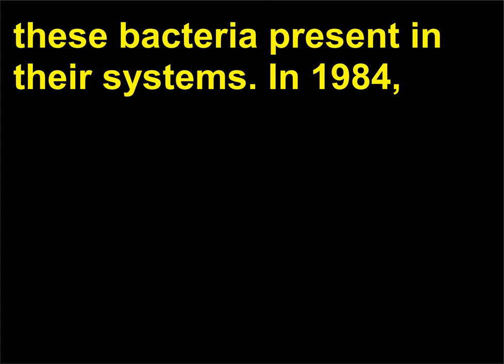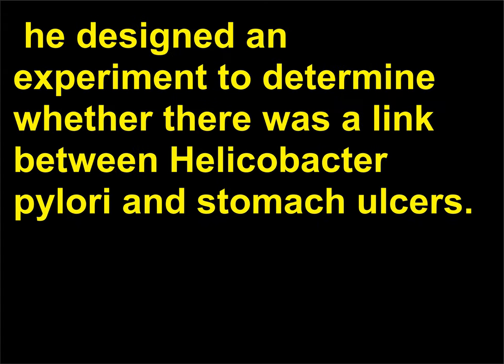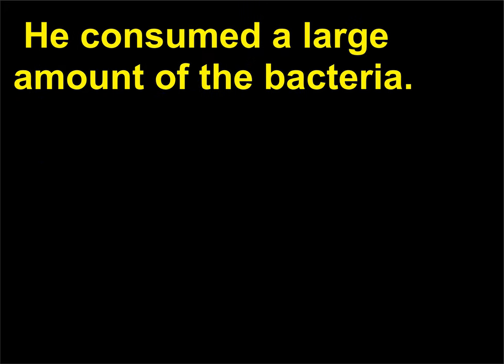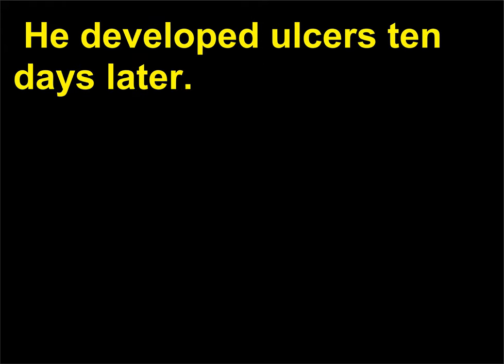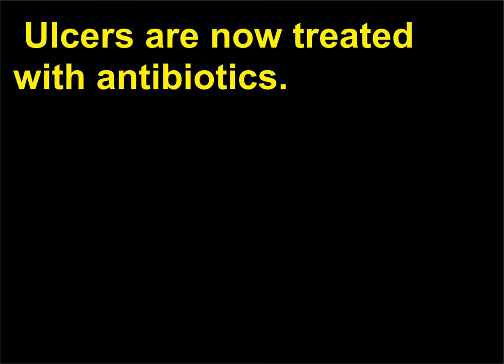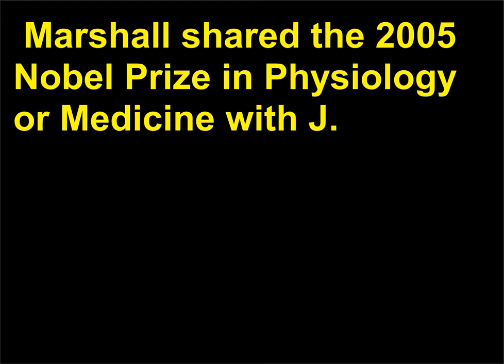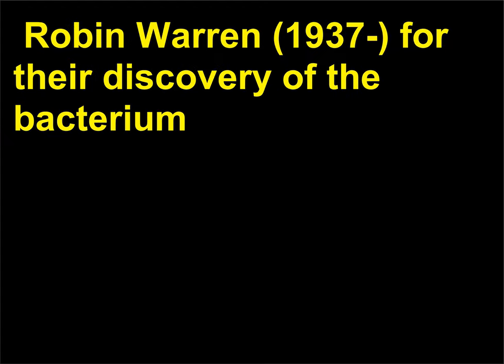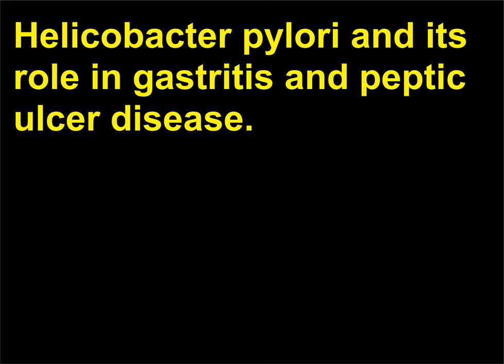In 1984, he designed an experiment to determine whether there was a link between Helicobacter pylori and stomach ulcers. He consumed a large amount of the bacteria and developed ulcers 10 days later. Ulcers are now treated with antibiotics. Marshall shared the 2005 Nobel Prize in Physiology or Medicine with J. Robin Warren for their discovery of the bacterium Helicobacter pylori and its role in gastritis and peptic ulcer disease.